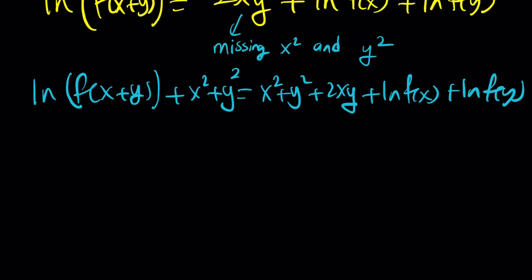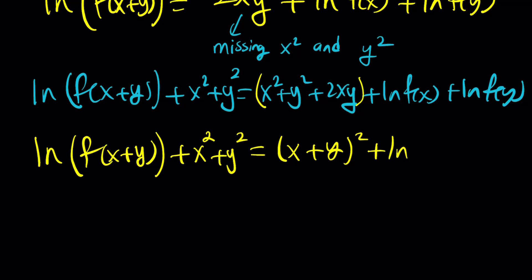And then everything else will stay the same. Now we did get a perfect square here, which is nice. So let's go ahead and write it that way. This is x plus y squared.